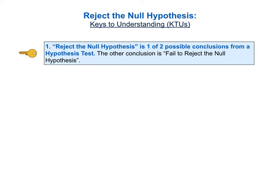Let's now begin our detailed explanation of each key to understanding. Our first KTU says: reject the null hypothesis is one of two possible conclusions from a hypothesis test. The other conclusion is fail to reject the null hypothesis. There are three concepts in that statement which may require further explanation: what is a hypothesis test, how do we come to a conclusion about a hypothesis test, and what is a null hypothesis. We'll cover each of these in turn.